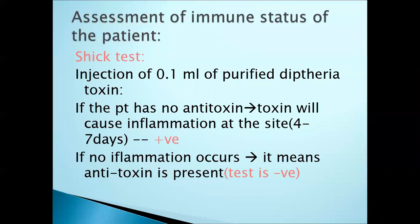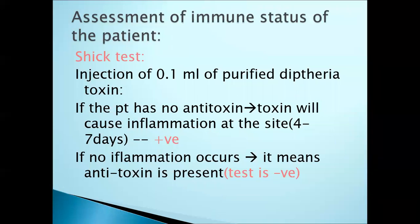Assessment of the immune status of the patient suffering from Corynebacterium diphtheriae: we perform the Schick test, carried out to assess immune status. Injection of 0.1 ml of purified diphtheria toxin is given. If the patient has no antitoxin — no antibody — then the toxin will cause inflammation at the site within four to seven days, meaning the Schick test is positive. If no inflammation occurs, antitoxin/antibody is present and the test is negative.